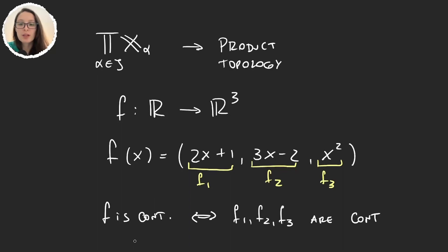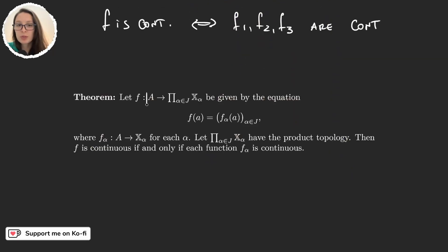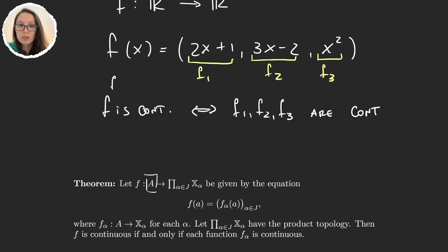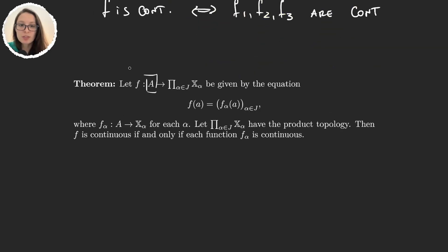Well, now we want to have something similar for product spaces, because here R³ would be similar to this product of just any set. Well, let's look at the following theorem. Let's say we have a function that goes from some set A, it doesn't matter what it is, to the product space. And this function just takes one element, and like this one, each coordinate will be given by some function f_α from A to X_α. So it will be the same, because here f₁ was a function from the real numbers to the real numbers, and the same for f₂ and f₃. Each of these functions is the coordinate function, here we will call it f_α, and it goes from A to X_α.